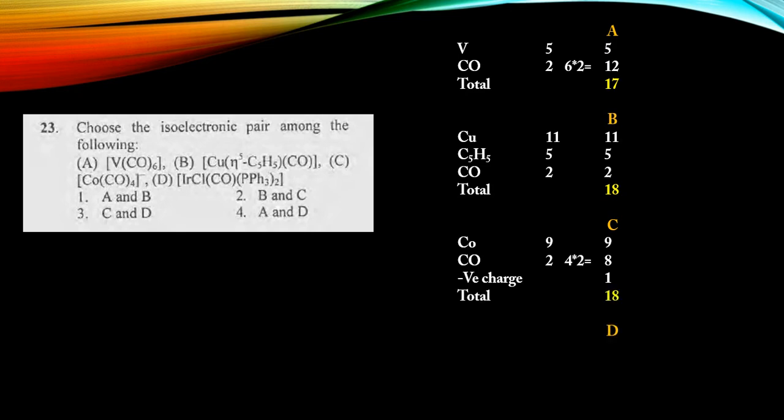For D, iridium has the same configuration as cobalt in its row, so 9 electrons. Chlorine minus is 1 as we have seen. For carbonyl, 2 electrons. PPh₃, as we have seen, contributes 2 electrons; there are two PPh₃, so 4 electrons. Total is 16 electrons.